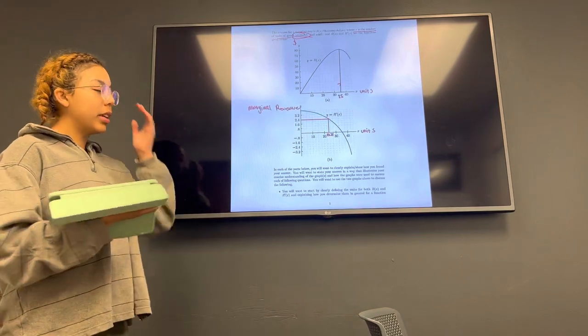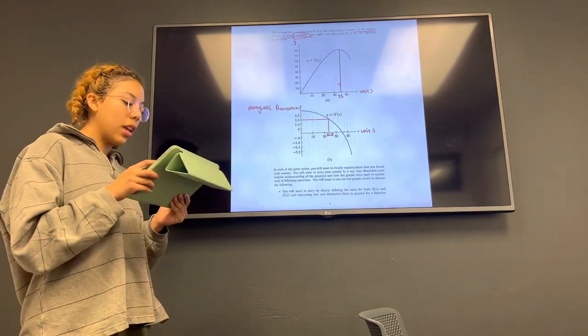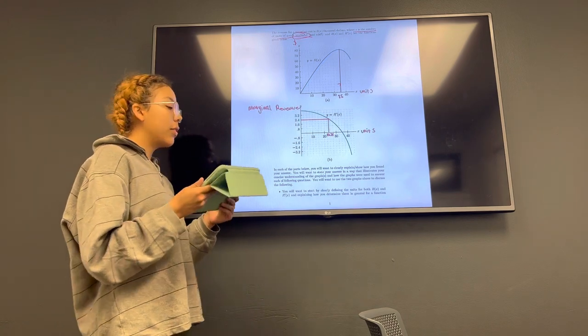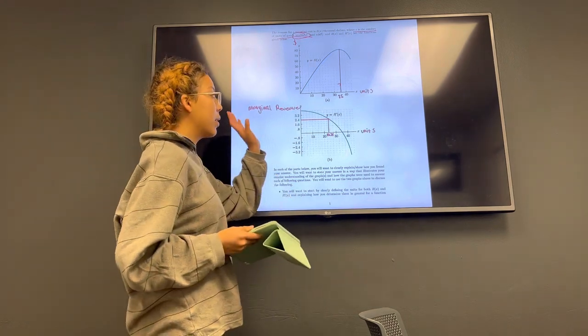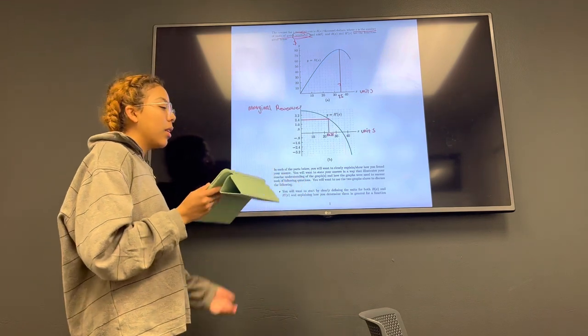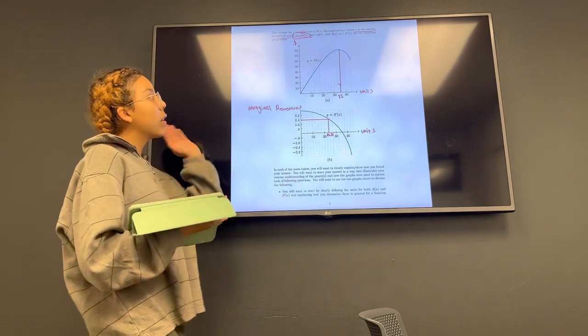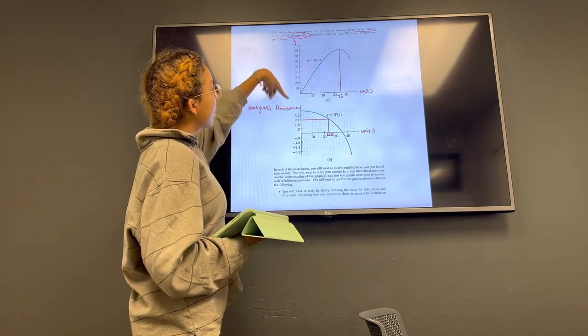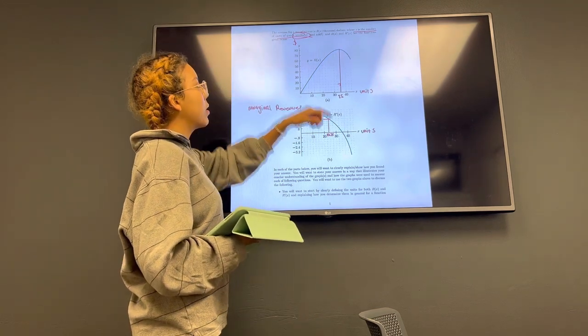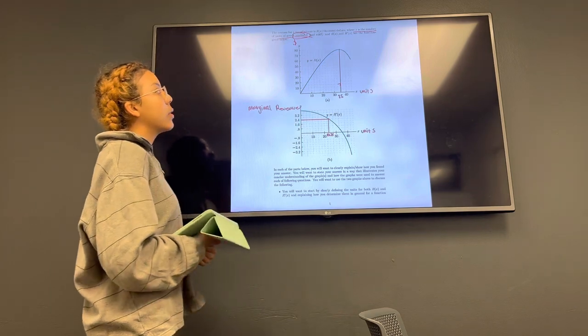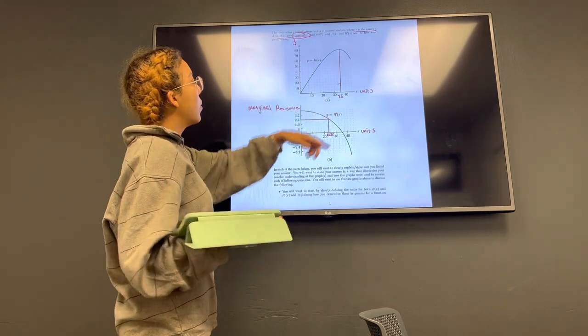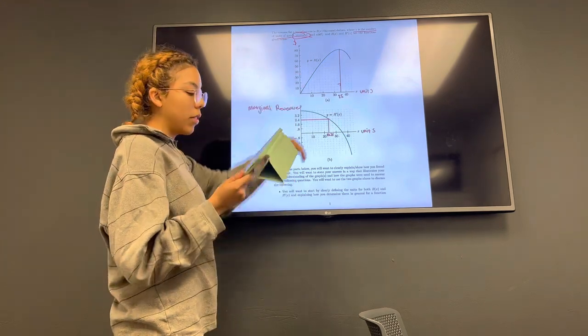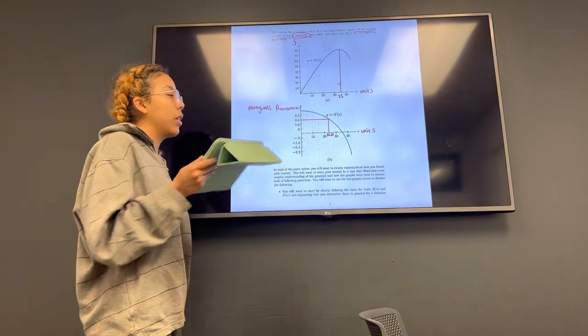Hello, we will be explaining calculation A. The first question asks us to clearly define the units for both R(x) and R'(x). The problem already gives us that R(x) represents the amount of money in thousands of dollars, where x is the number of units. So the units for this graph would be dollars per unit goods.